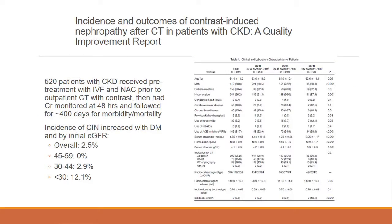A study on incidence and outcomes of contrast-induced nephropathy after CT in patients with CKD included 520 patients. This was a prospective trial where all patients were referred to a nephrologist beforehand and received NAC and IV fluid prior to an outpatient CT with contrast. Creatinine was measured at 48 hours, and patients were followed up to 400 days for morbidity and mortality. The overall incidence of CIN was about 2.5%. In the eGFR 45–59 group the risk was 0%; in the 30–44 group, 2.9%; and in the less than 30 group, as high as 12%. This shows that risk can be stratified by eGFR.